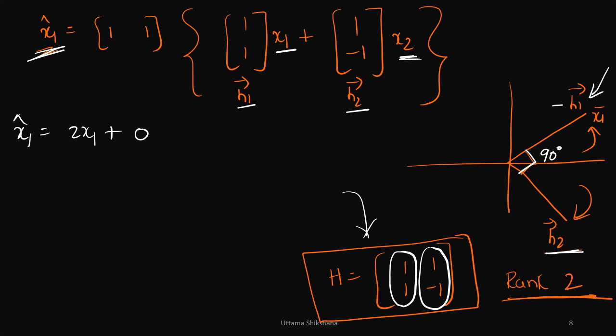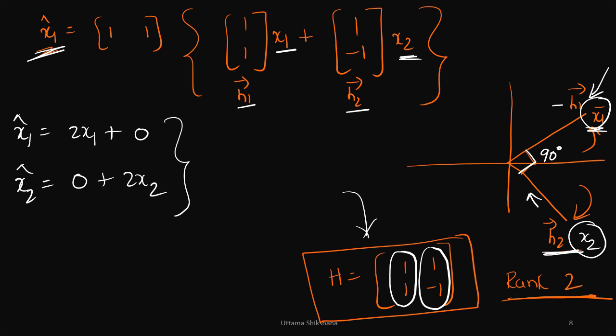Since h1 and h2 were orthogonal to each other, this strategy worked. The key idea is: to recover x1, place the receiver in the direction orthogonal to h2 (the direction where x2 is transmitted). Similarly, to recover x2, tune the receiver in the direction orthogonal to h1. This strategy worked very well when h1 and h2 are orthogonal.